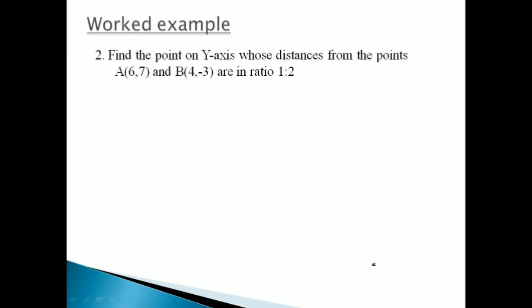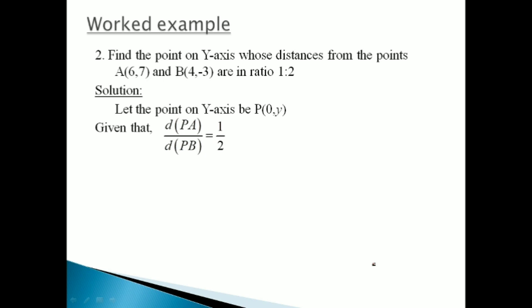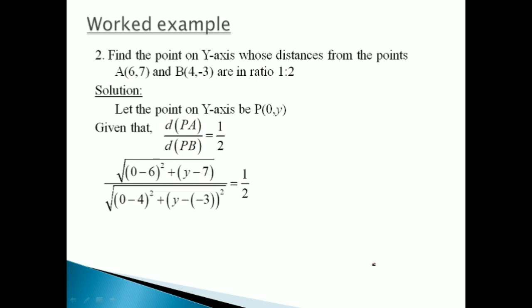Second question: find the point on Y-axis whose distances from points A and B are in the ratio 1:2। Y-axis पे कोई भी point आ जाए तो X की जगह 0 हो जाएगा। So let the point on Y-axis be P = (0, Y)। The condition given is PA/PB = 1/2। Using the distance formula for both PA and PB, cross multiplying: 2 × √(0−6)² + (Y−7)² = 1 × √(0−6)² + (Y−1)², giving 2 × √(36 + (Y−7)²) = √(36 + (Y−1)²)।